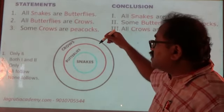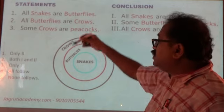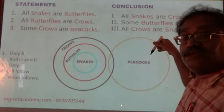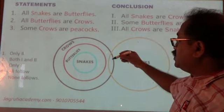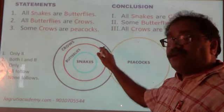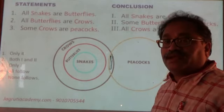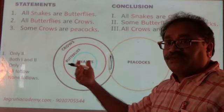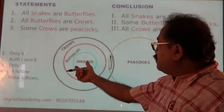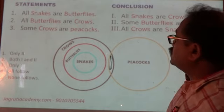Some crows — did it say some butterflies? No. Did it say some snakes? No. It said some crows. That's the black circle — are peacocks. So the diagram to be drawn is some crows are peacocks. Can you say anything about peacock and butterfly? No. Peacock and snakes? No. When I say we cannot say anything, we cannot say from all, some, no, or some not. So nothing can be said between snake and peacock, or between butterfly and peacock. Let's verify the answers.